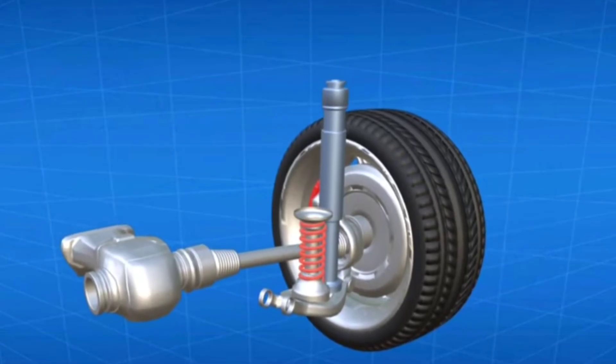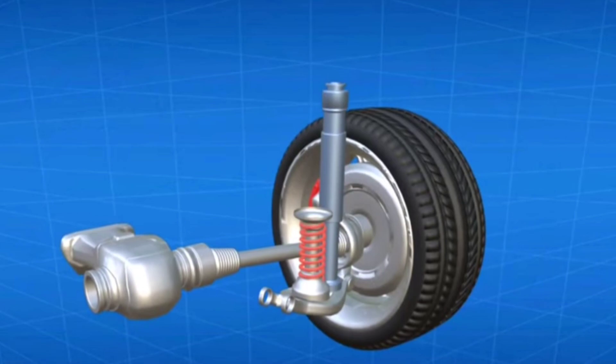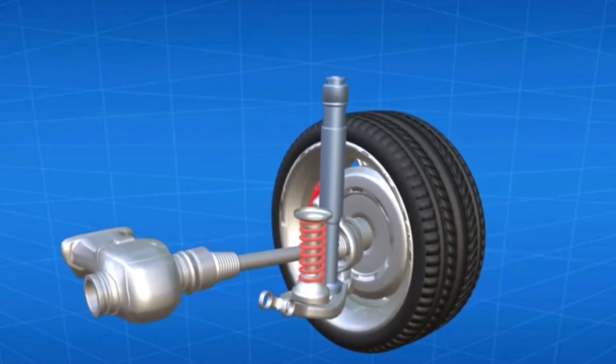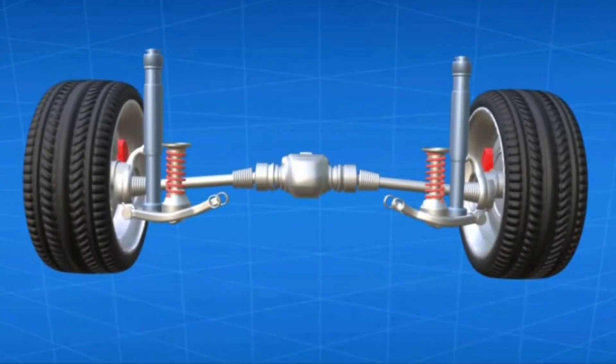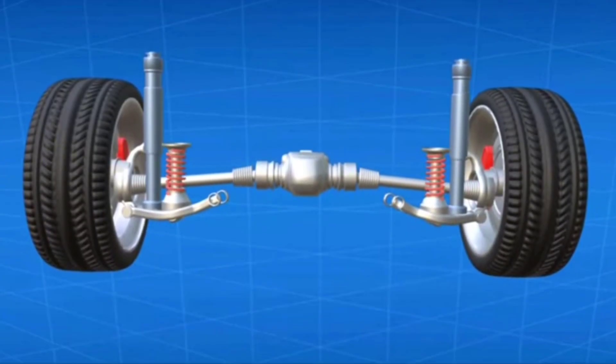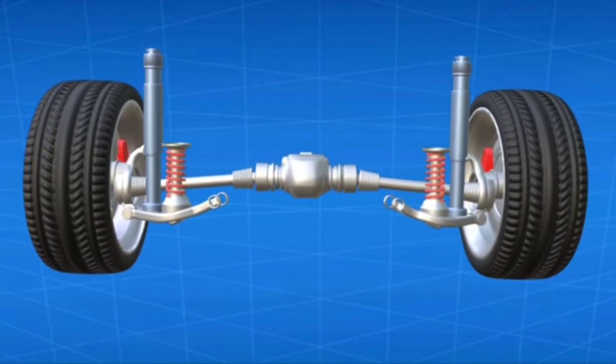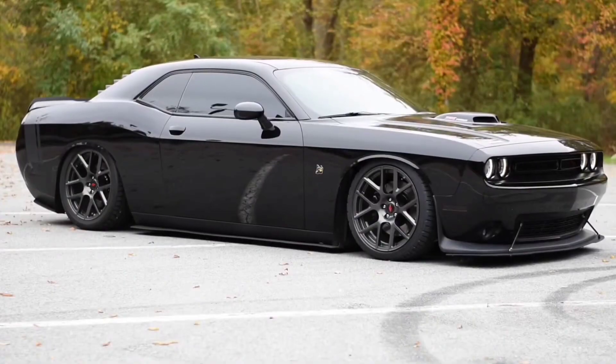Finally, we have torsion bar suspension, which uses a torsion bar as the main springing element. This robust system is common in off-road vehicles, delivering durability and adaptability to rough terrains.